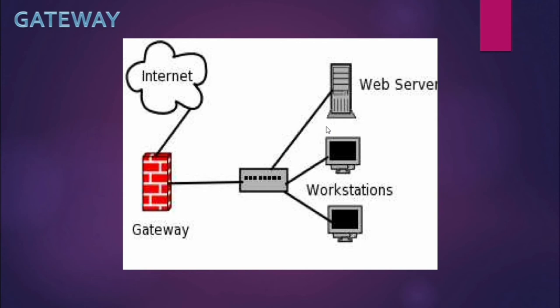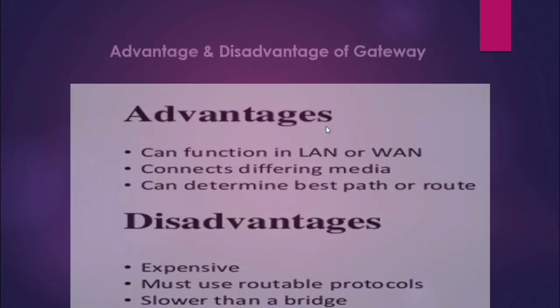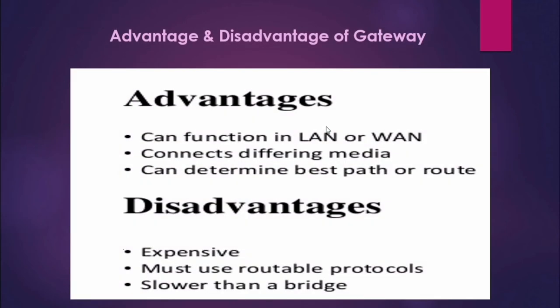In this pictorial diagram, you can see the worldwide web — the internet — connected via a gateway. Bangladesh is connected through this gateway, and from the gateway we can use several servers and workstations together. A gateway can function in both LAN and WAN connections.